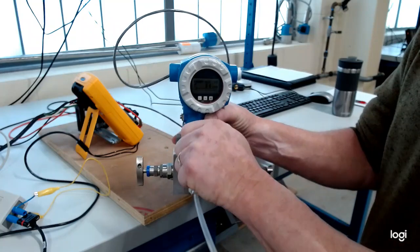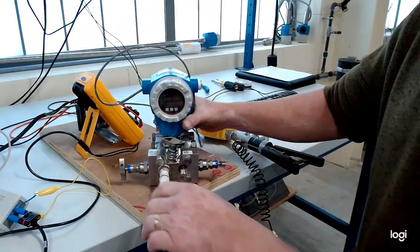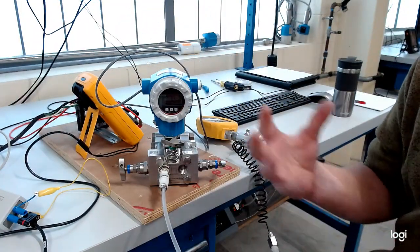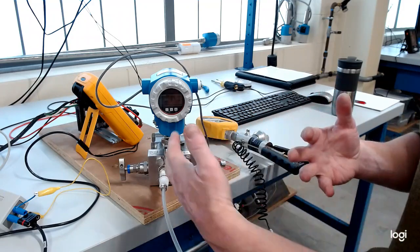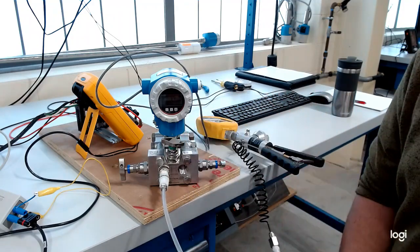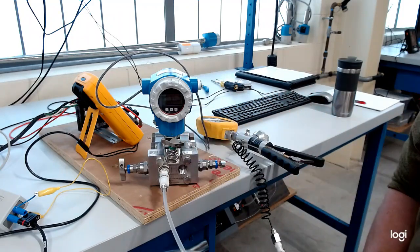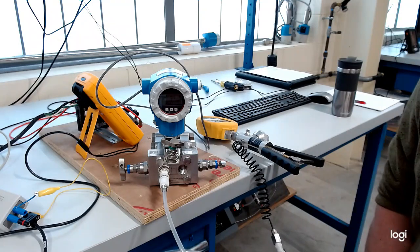So that isolation valve is really handy when we're working out in a process and we need to isolate anything from the process material coming into this, or if we need to get this transmitter set up to get it commissioned.